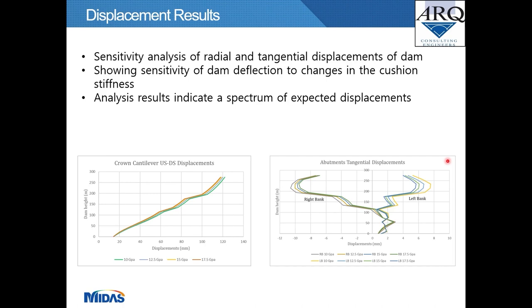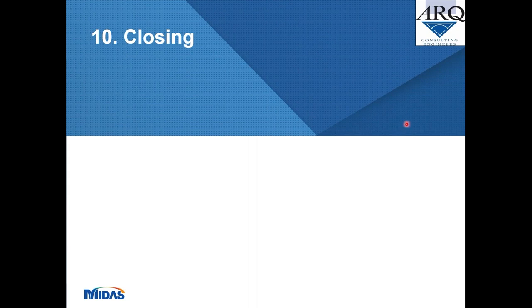A sensitivity analysis was undertaken to evaluate the sensitivity of the dam's radial and tangential displacements to changes in cushion stiffness, providing a reasonable spectrum of expected displacement results. Plots show upstream-downstream displacements at the crown cantilever and tangential displacements on the right and left banks of the dam, with various curves representing the different cushion stiffnesses.